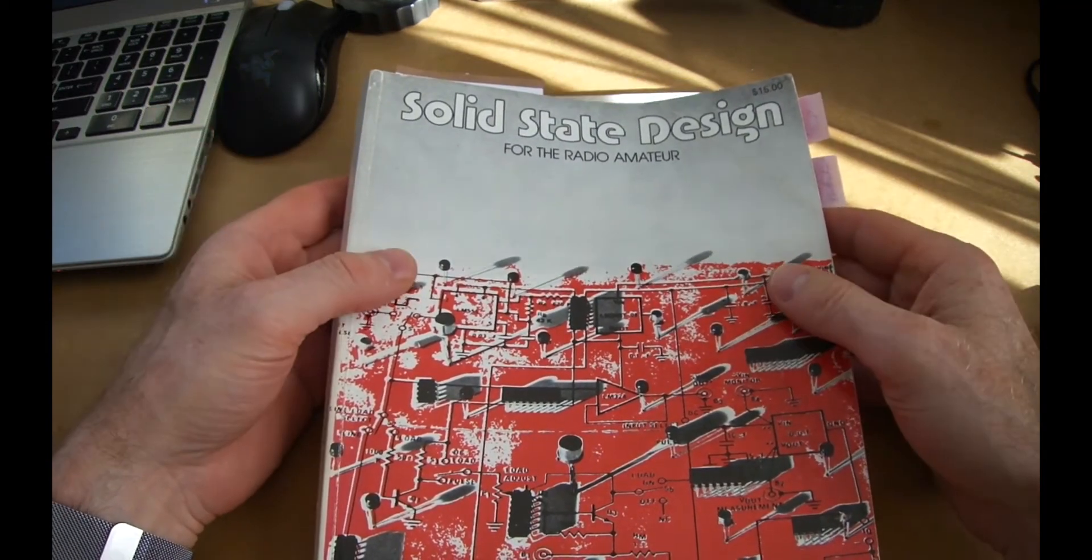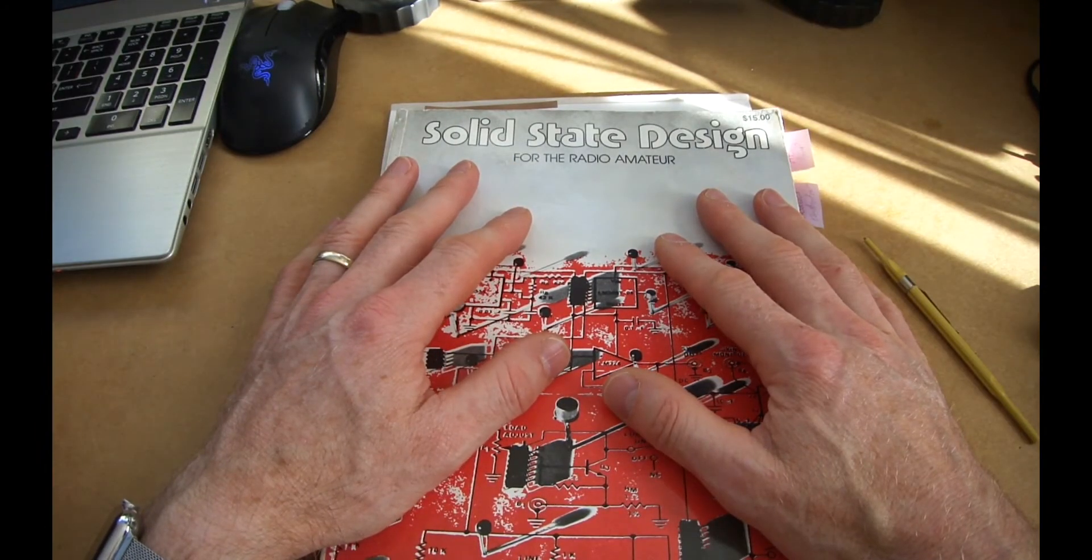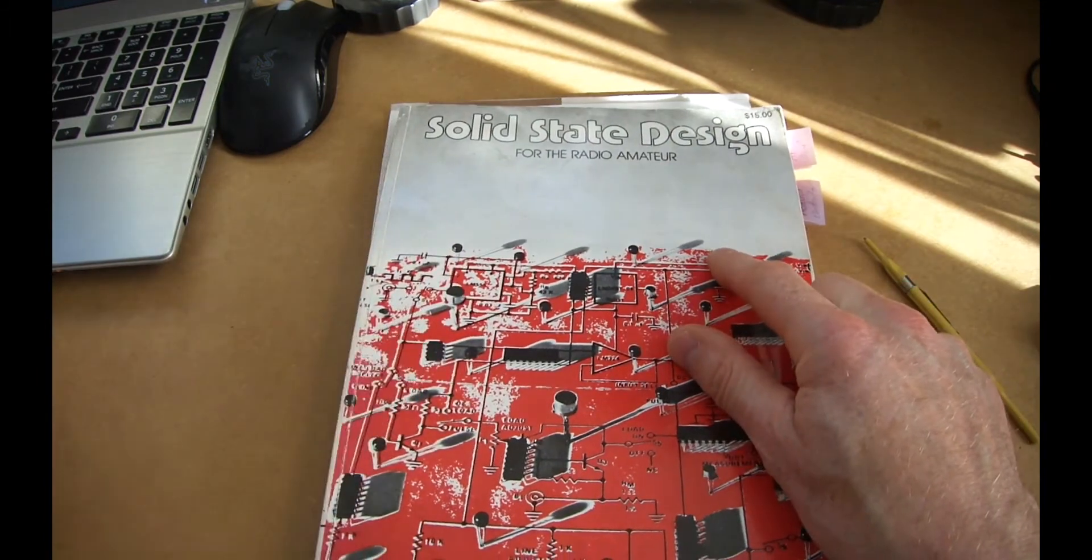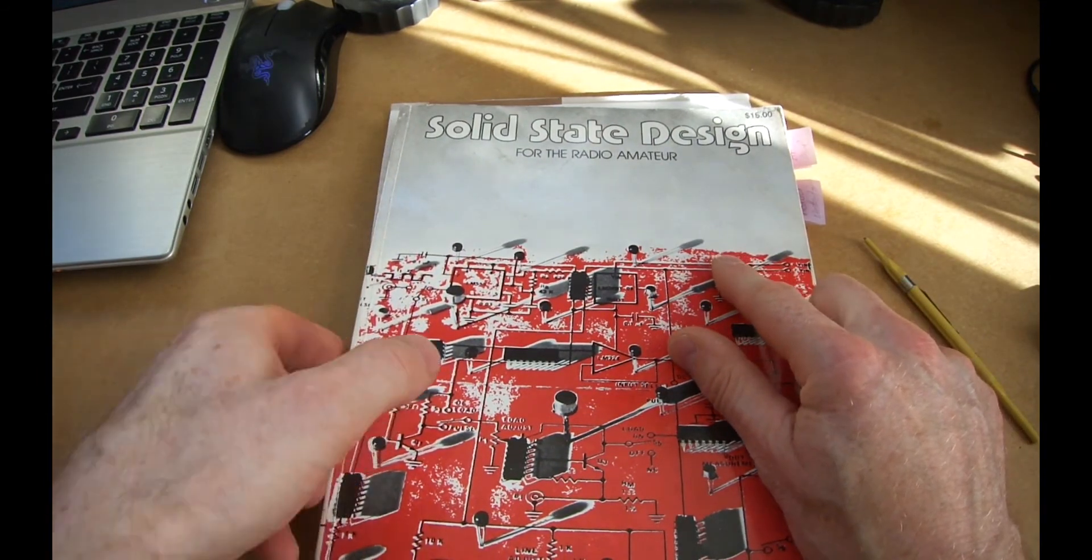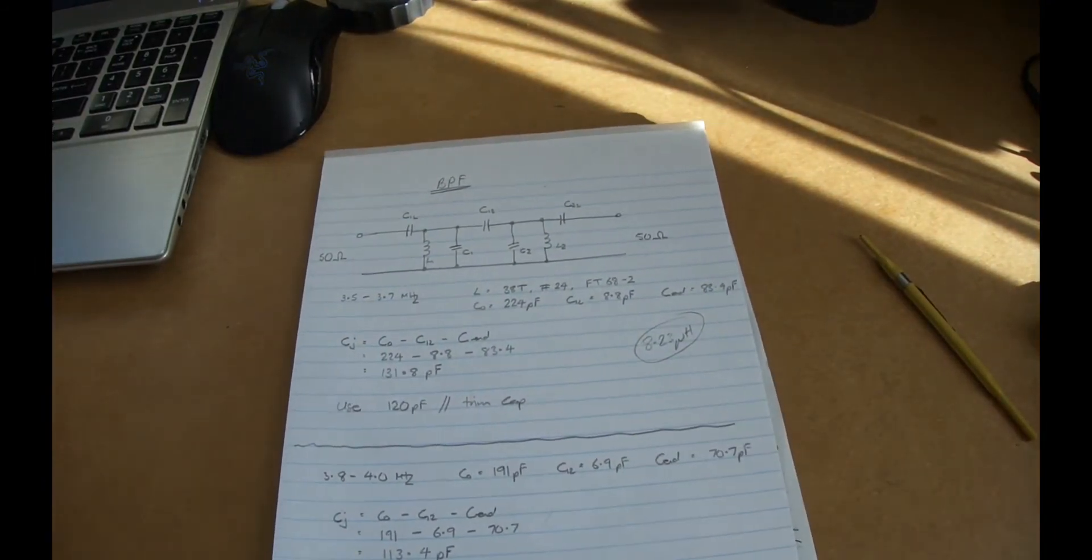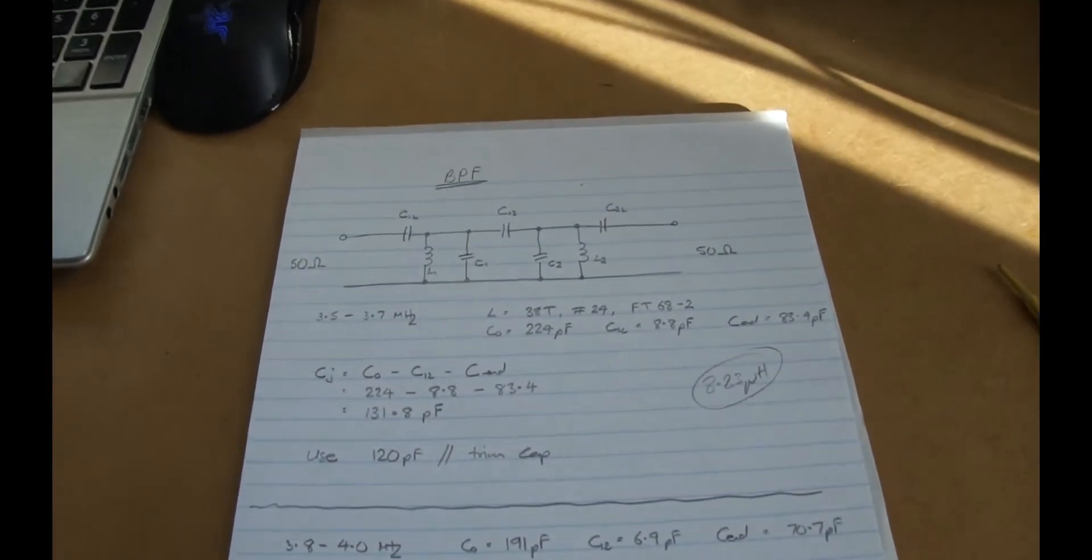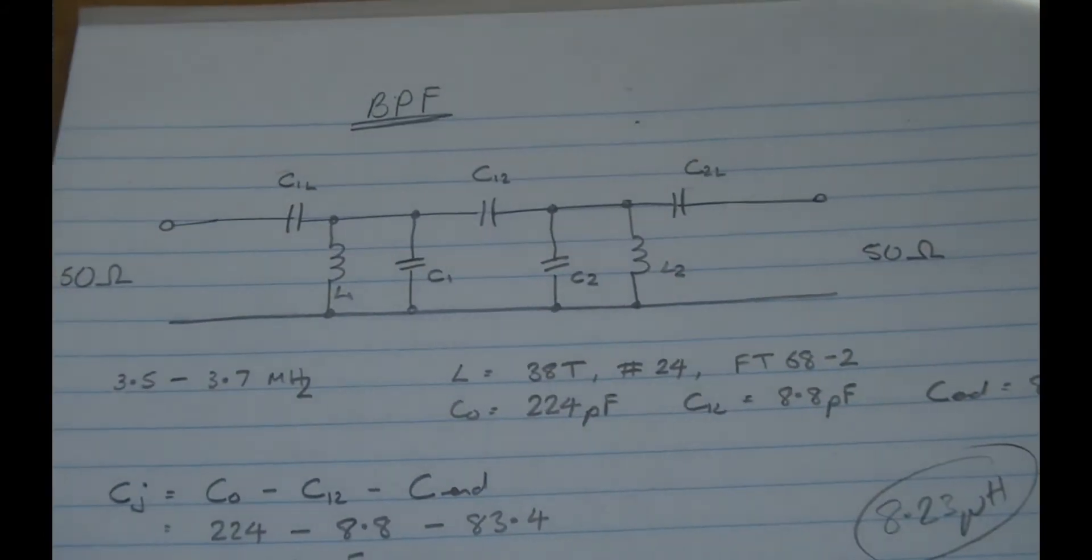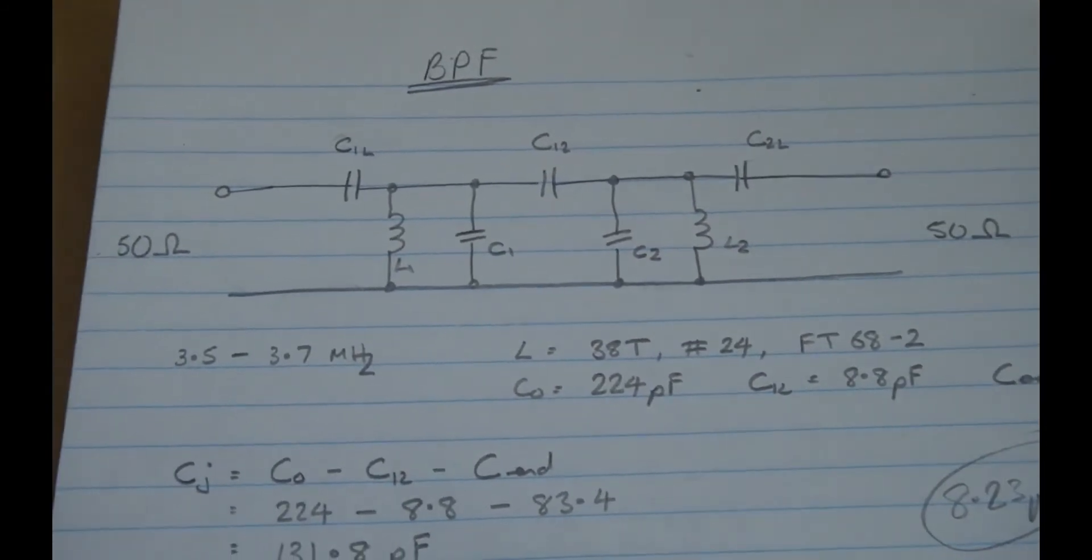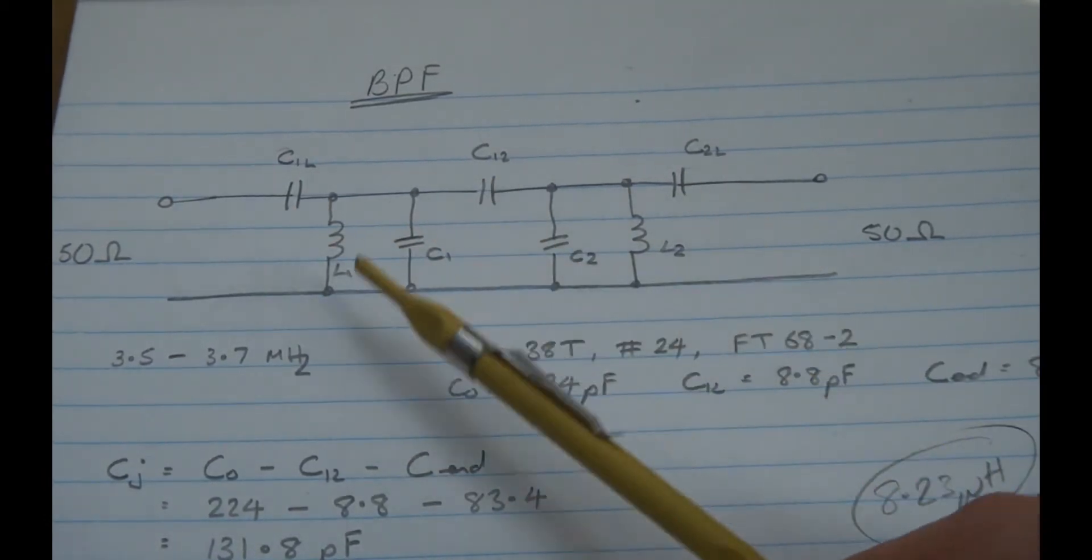It covers amplifiers and filters and all sorts of things. I can't show you what's in here regarding the filters because it's copyrighted and I don't want to get myself in trouble. But suffice to say there's a very good annex at the back which covers all sorts of things. So we're going to do a doubly balanced filter. It essentially looks like this. It's expecting to see 50 ohms on the input and output and has three series capacitors and two tank circuits.